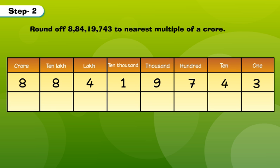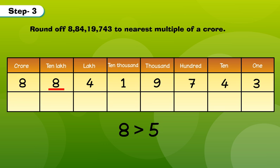Step 2: We underline the digit in the 10 lakhs place. Step 3: The underlined digit is greater than 5, so we increase the digit in the crore's place by 1 and replace all other digits to 0.